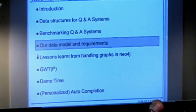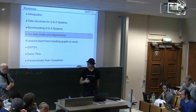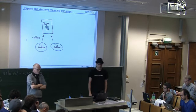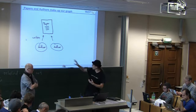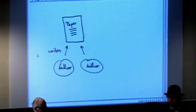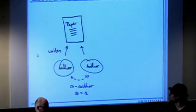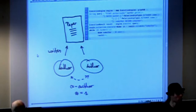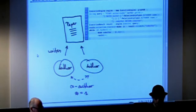Let me talk more about our data model. We have papers and authors, and authors write papers — a bipartite graph. We want to run several different queries on this. For co-author relationships, it's a graph traversal with breadth-first search at depth 2: start at one author, go to the paper, then go to the other authors. In Neo4j you can do bidirectional traversal so direction of the relationship doesn't matter. This gives a lot of valuable information about author relationships.